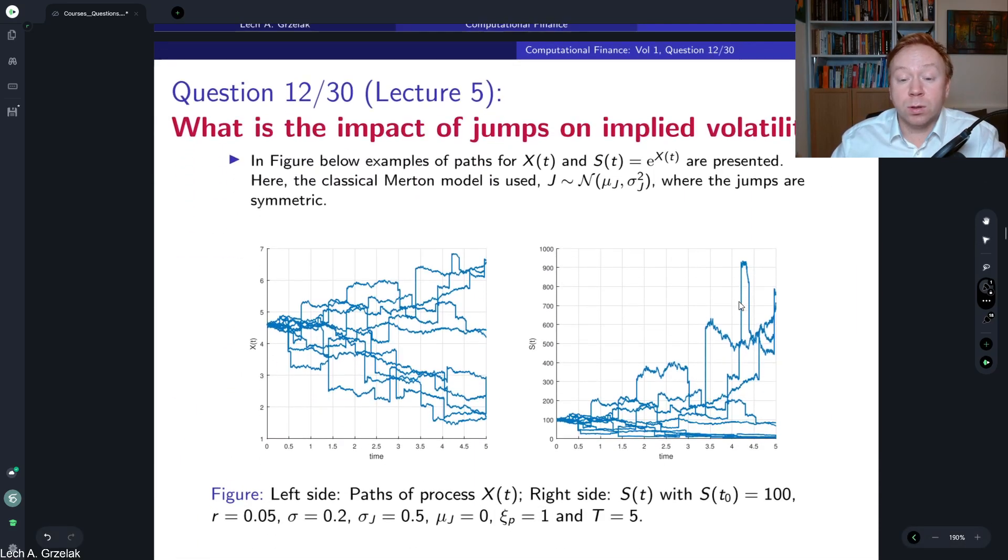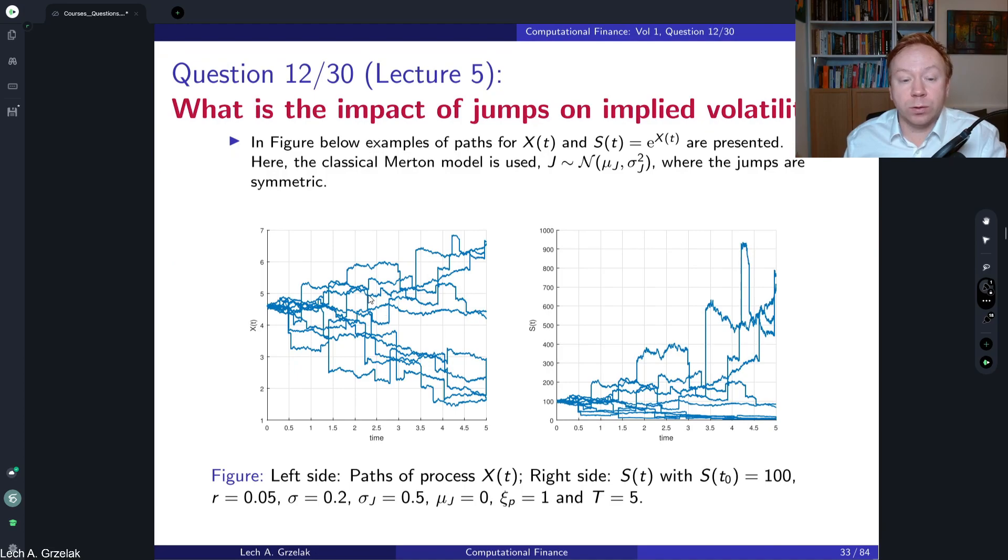The jumps will have impact on the realizations, on the trajectories or paths of our stochastic process. On the left-hand side we have paths for x, so this is under log transformation. We see there is a continuum which comes from the Brownian motion. We have an initial value which you can see is a hundred, so log of a hundred, it's very continuous, and then a jump happens. The paths jump either upwards or downwards depending on the realization from this normal distribution. You can see upwards or downwards jumps. If we look at the stock itself, it's continuous and then with number of jumps. Each path will have a number of jumps depending on a Poisson process which drives the events of jumps.